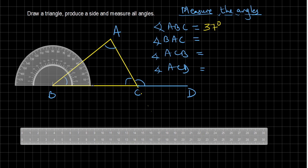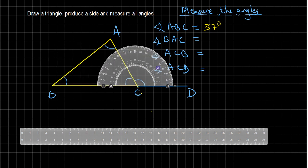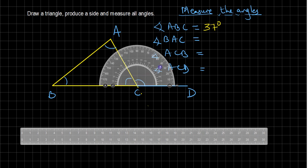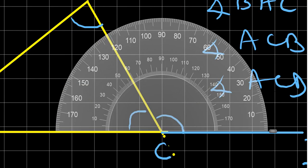Now I have to measure another angle — that is BCA, or ACB. I have to measure ACB. I have to count from 0, so I have to observe the inner scale over here. On the inner scale, we can see 0, 10, 20, 30, 40, 50, and 60.